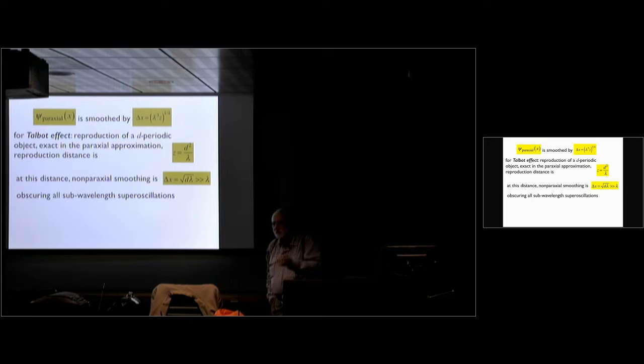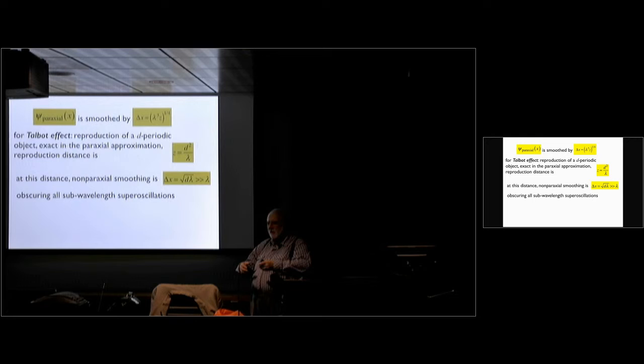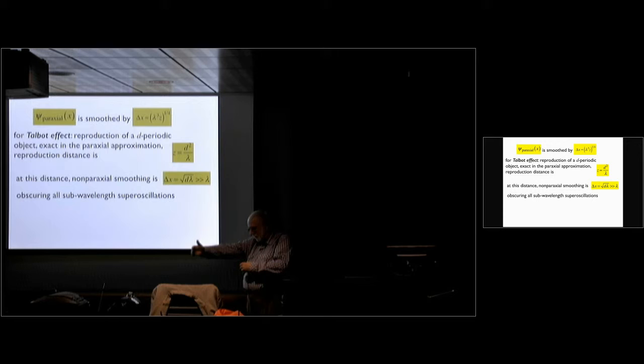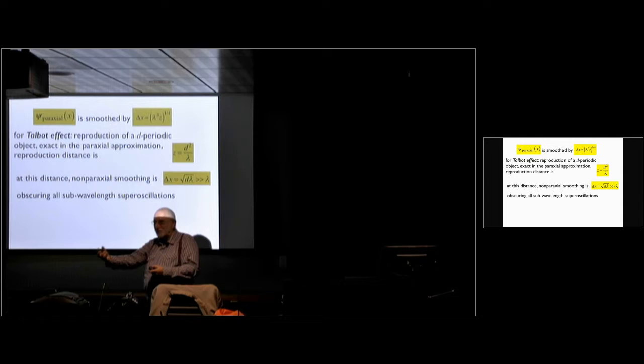There were actually numerics in our paper showing this, but if you think of it ab initio you can make much more convincing pictures. You really do see that you start out with this sub-wavelength structure. Paraxially, you go to this Talbot distance and everything perfectly reproduces. You put on exact non-paraxiality and then you see all the structure of the object except the sub-wavelength structure that you want to see.